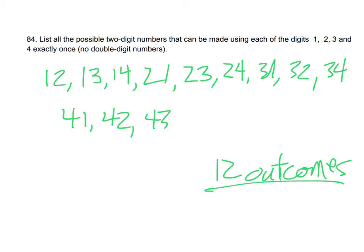So if we list all the possible two-digit numbers that can be made using each of the digits one, two, three, and four, exactly once, no double digits. So you can't have an 11 or a 22, 33, 44. Really, this is just about being organized. So I want to make all the two-digit numbers I can with a one in the tens place, then all the two-digit numbers that I can with the two in the tens place, and et cetera. So here are the outcomes. I listed them here for you, and then that's 12 total.